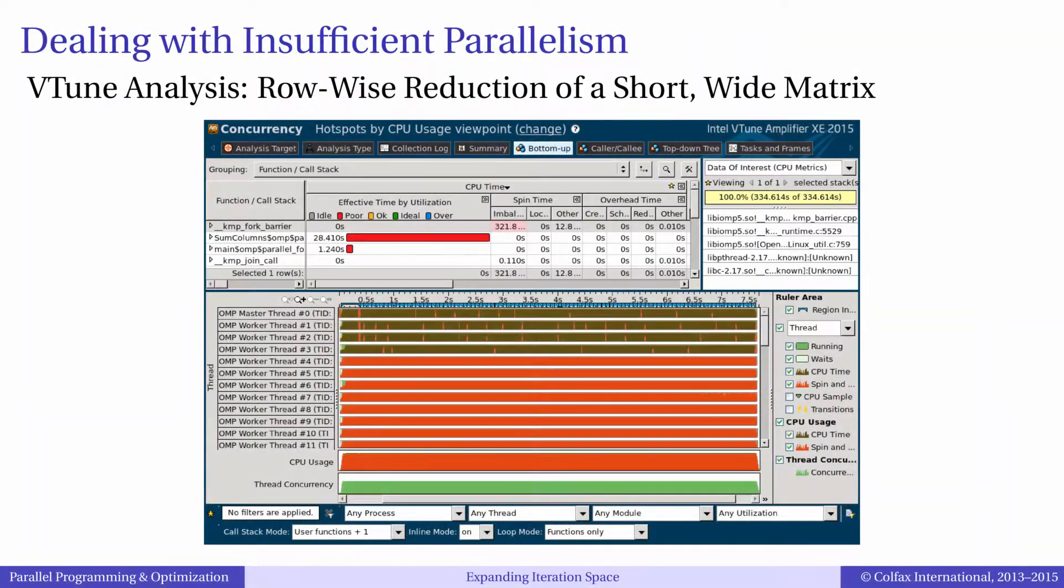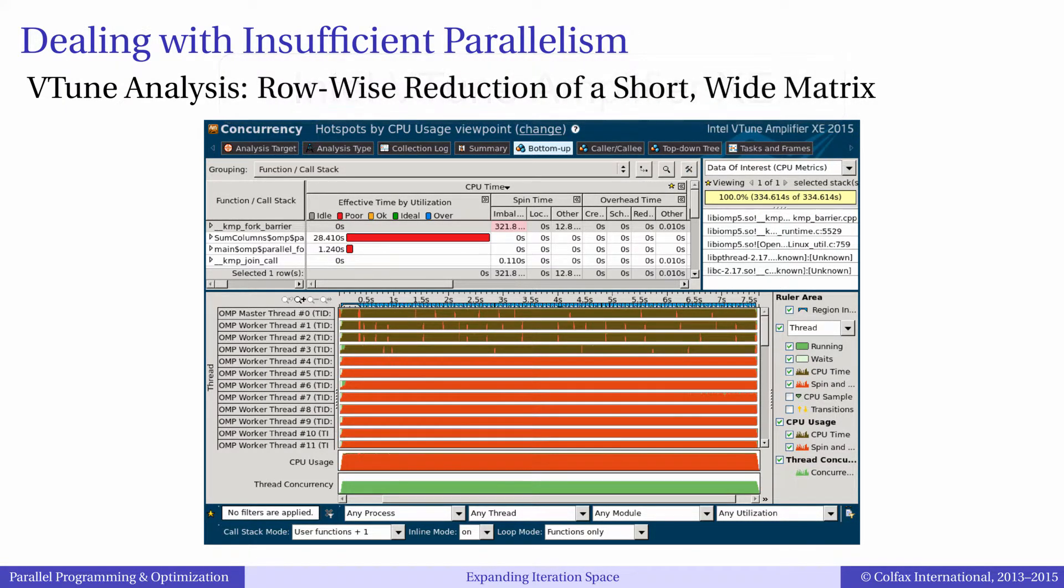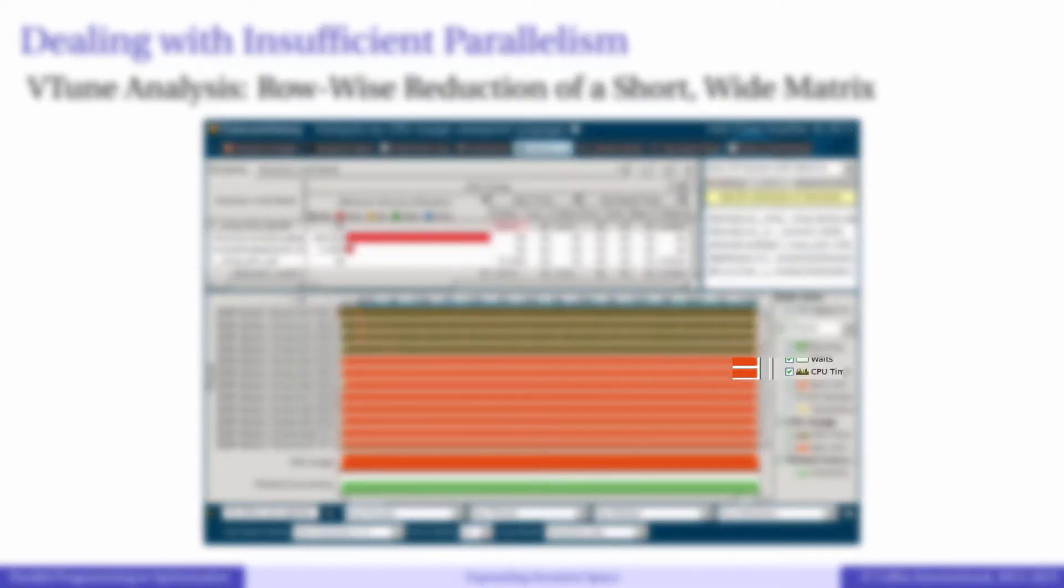If we run this application in the performance analysis tool Intel VTune Amplifier XE, we will see the following picture. The horizontal bands are the timelines of different OpenMP threads. We want to see brown color regions, which means useful computations.